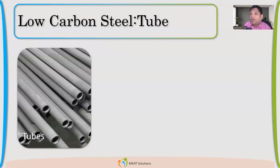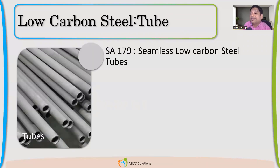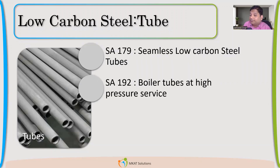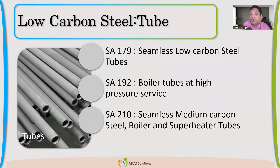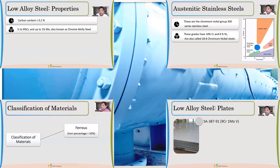For tubes: SA179 is used for seamless low carbon steel tubes. If you require boiler tubes, use SA192. For very high temperature applications such as superheater tubes, SA210 is used — boiler and superheater tubes are made from SA210. I hope you understood this part; stay tuned for more videos related to material requirements.